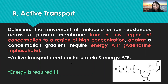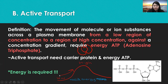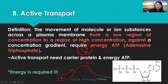Active transport needs carrier protein and energy ATP. The carrier protein has a binding site where substances bind. It is like climbing a mountain — going from low to high is difficult and requires energy. So active transport requires energy ATP because it goes against the concentration gradient.